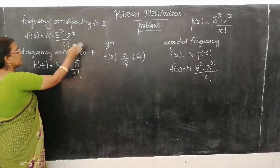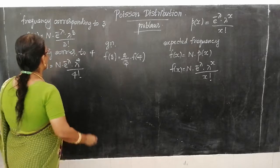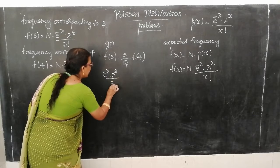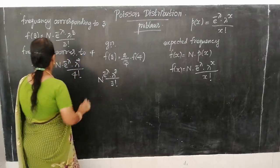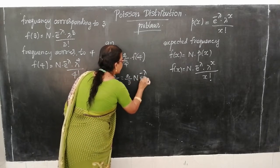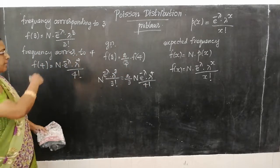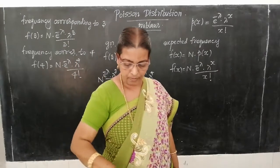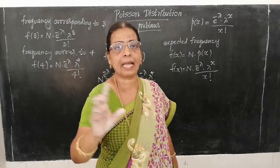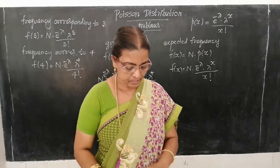We substitute the expressions: N · e^(−λ) · λ³ / 3! = (2/3) · N · e^(−λ) · λ⁴ / 4!. After simplifying and cancelling common terms, we get lambda equal to 6. The mean is λ = 6, and the standard deviation is √λ = √6. That is our answer for this problem.